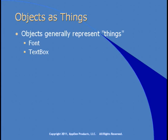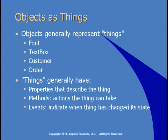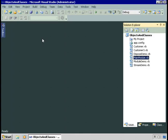Generally, objects represent things or events that occur — for example, a font, a text box, a customer, an order. Each of these is a thing. You can also think of objects representing events, such as a phone call or a letter being received. Things generally have properties that describe the thing, methods that are actions the thing can take, or events that indicate when the thing has changed its state. Well, I think we're going to have to jump in and create our own class to get a flavor for how this all works.